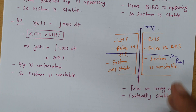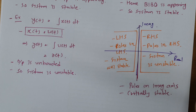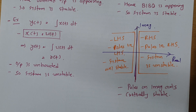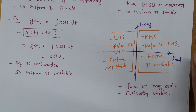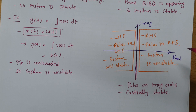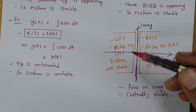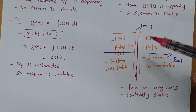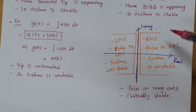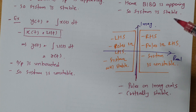We can analyze stability based on poles and zeros. To identify poles and zeros, we need to find the impulse response of the system. Note that stability does not depend on zeros — stability always depends on poles only. If the position of poles is in the left-hand side of the pole-zero plot, the system is stable. On the imaginary axis it is critically stable, and in the right-hand side region, the pole position indicates the system is unstable.